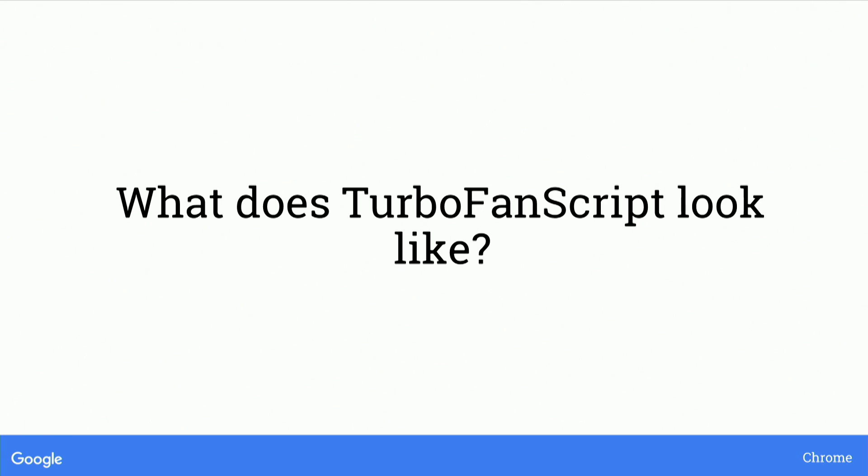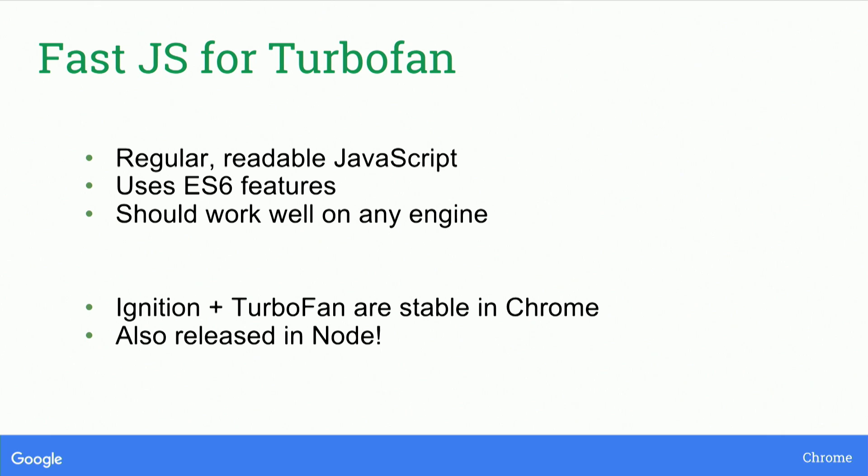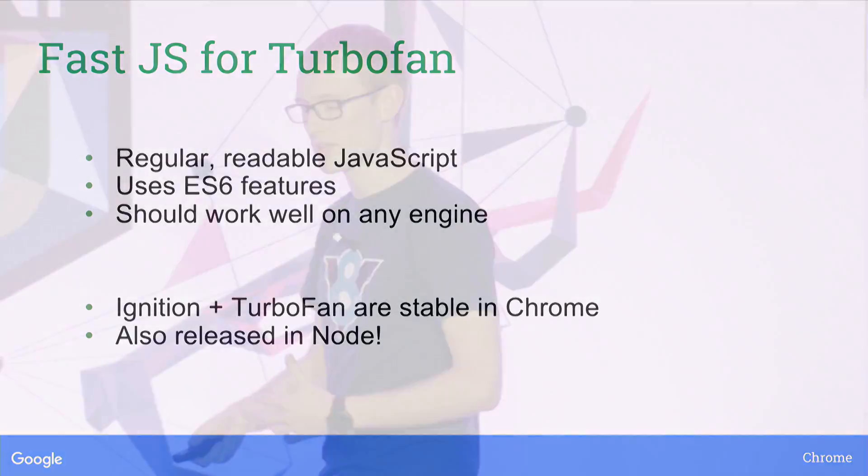I said this talk would be about fast JavaScript, and you might want a 'TurboFan script' list — but it doesn't really exist. Fast modern JavaScript should look like regular, readable JavaScript. That's the goal. You shouldn't have to hack around and add apologetic comments. You should just write regular JavaScript and it should run fast. It should use ES6 features. It should work well on any engine. There's a subset of JavaScript which is more easily optimizable and does sensible things — this should run fast everywhere, without specializing to a particular engine, version, or compiler. Ignition and TurboFan are stable in Chrome right now. If you're using Chrome, you're already using this new compiler pipeline. It's also released in Node and will be in the Node 8 LTS.